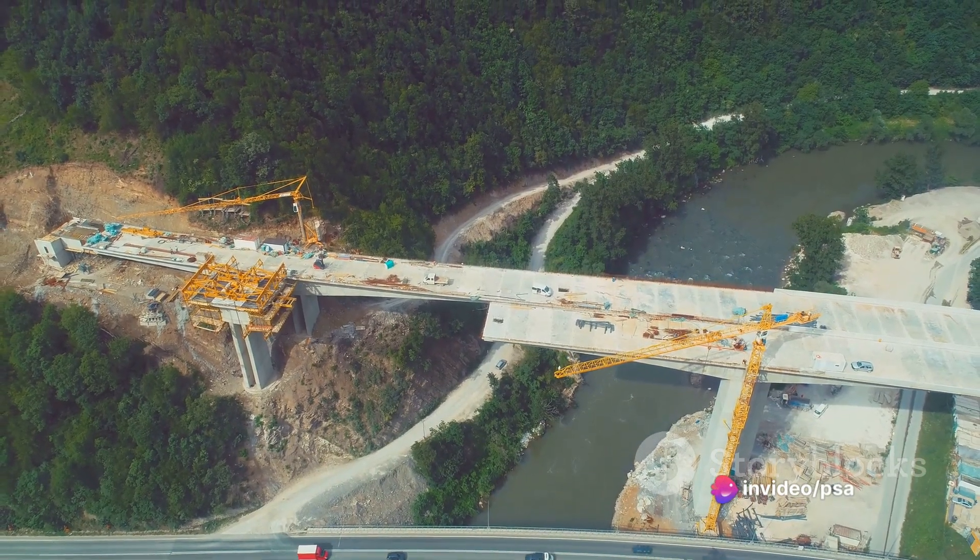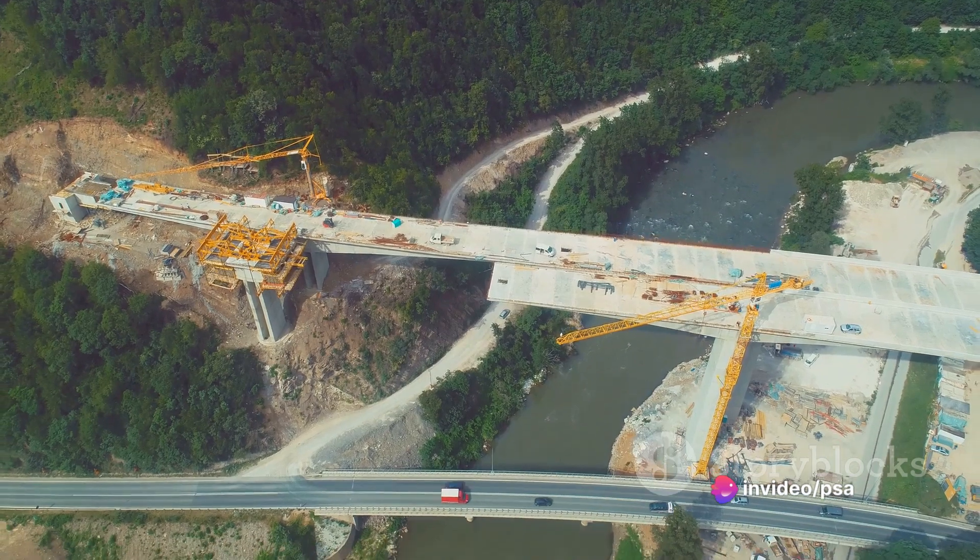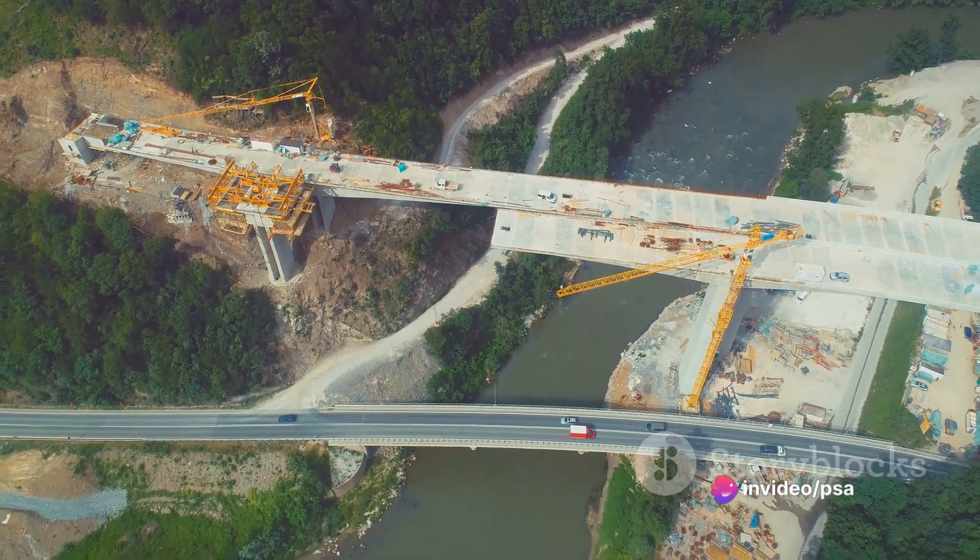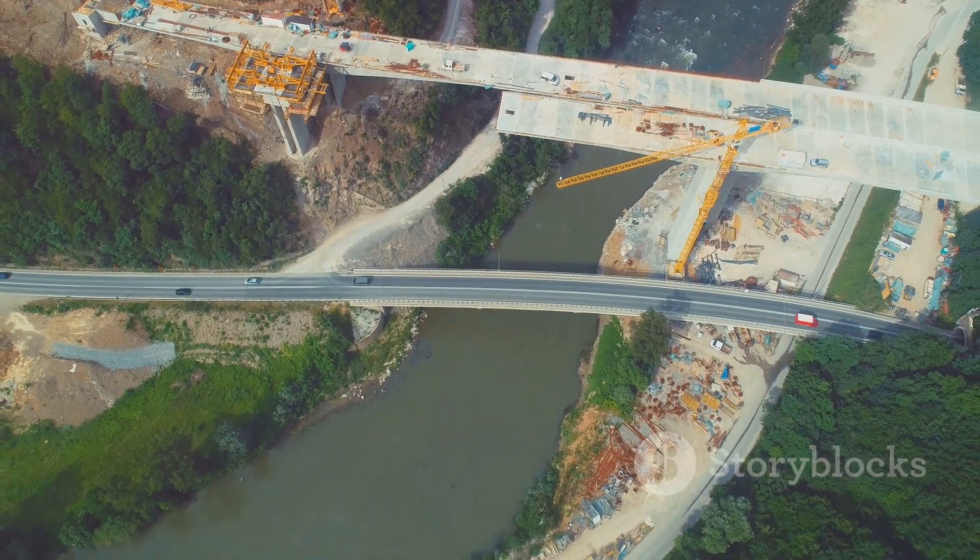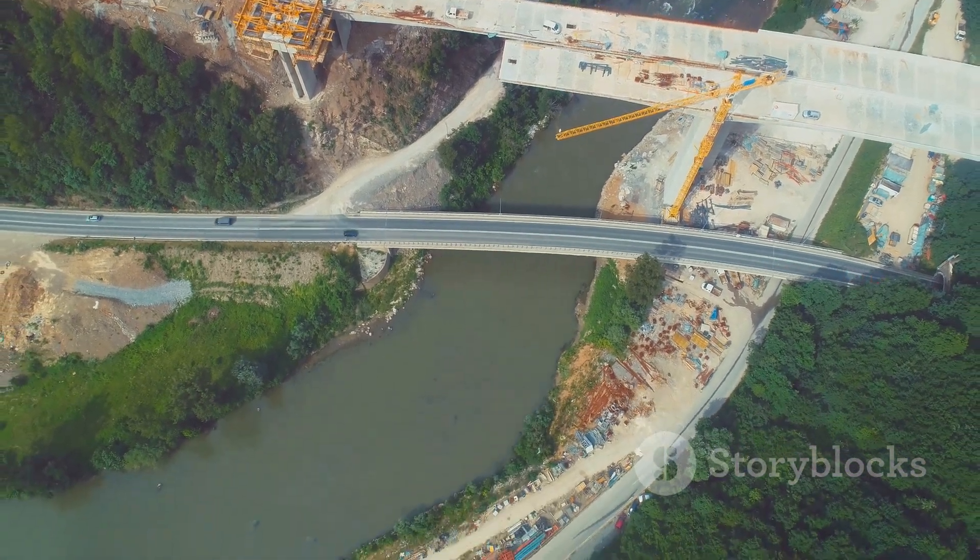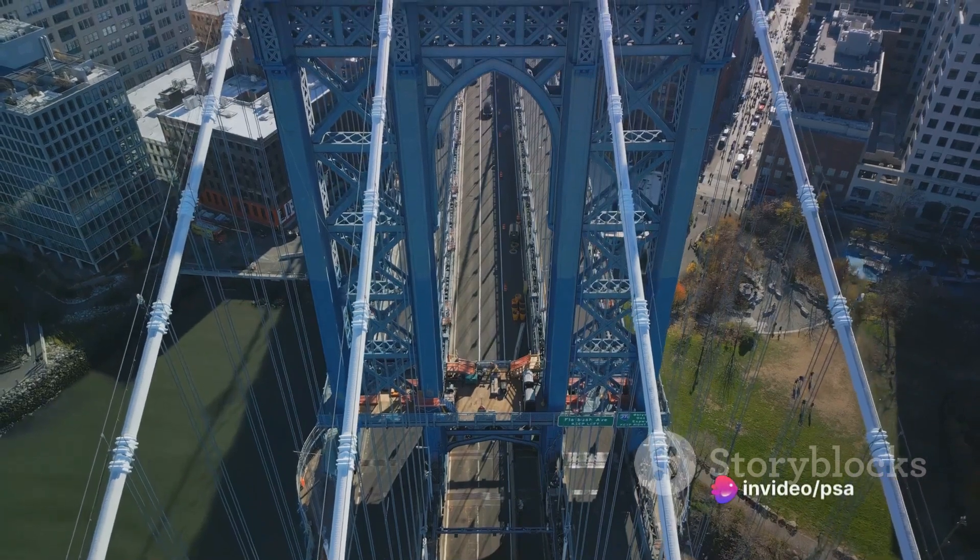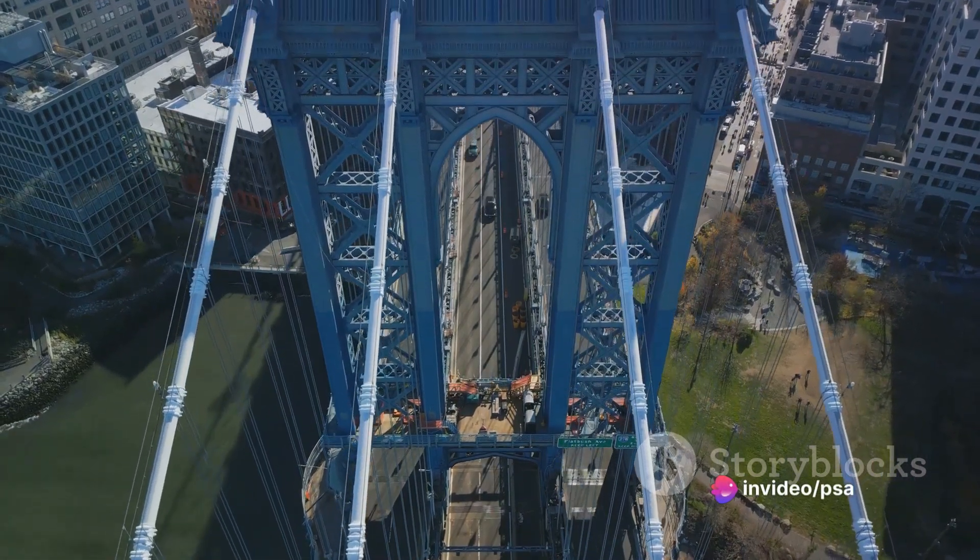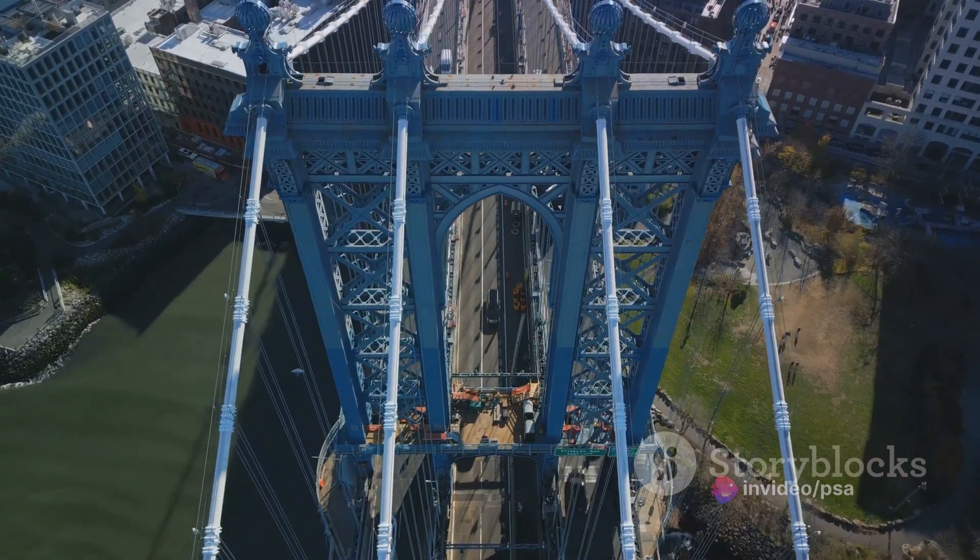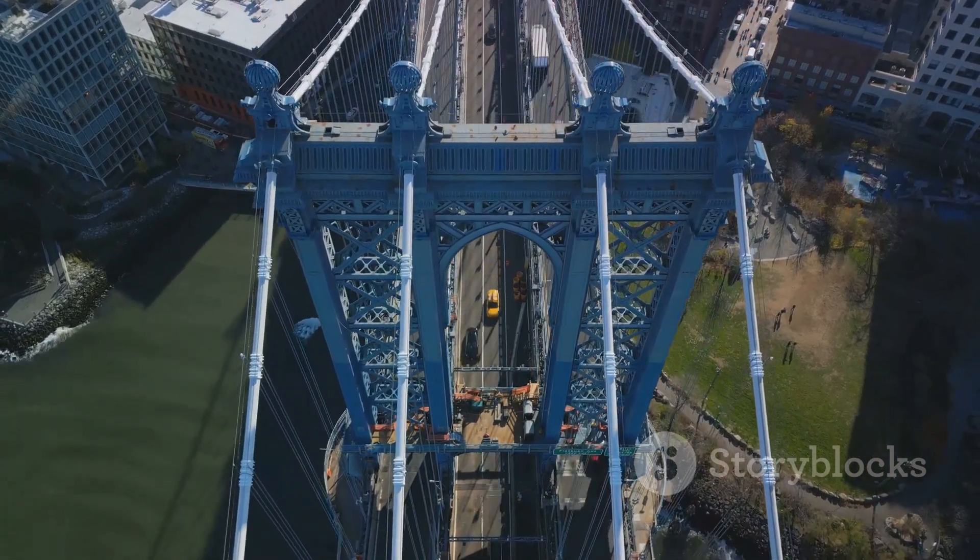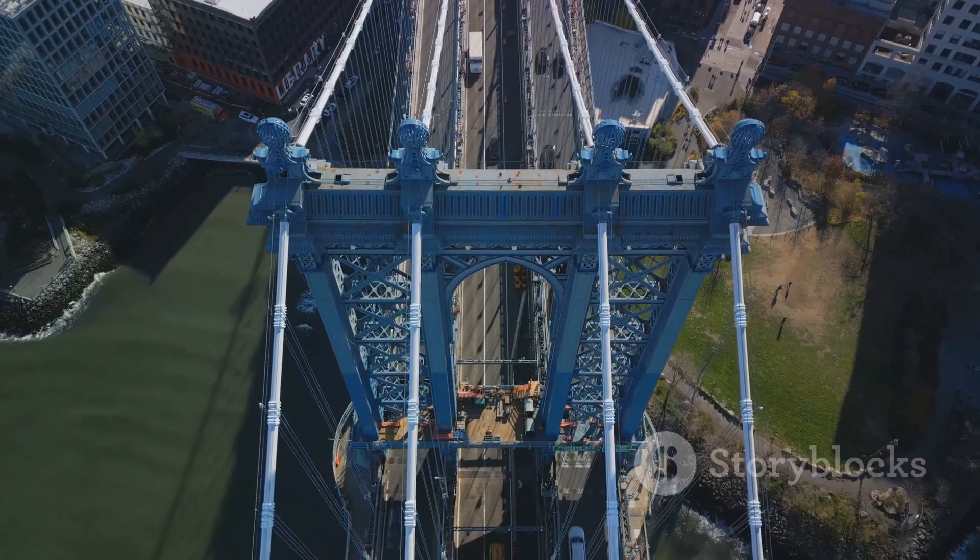Now, let's take a look at engineering. Engineers, much like architects, utilize Euclidean geometry in the designing and building of structures. Bridges, for instance, are often constructed using triangular shapes because triangles, according to Euclidean geometry, are the sturdiest shapes and provide the most support. When engineers design highways or railways, they use the concept of parallel lines to ensure the roads or tracks never converge and cause accidents.